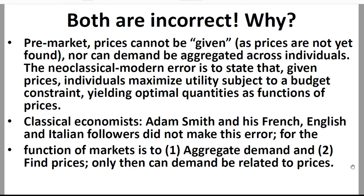The Classical Economist — Adam Smith in Chapter 7 of the Wealth of Nations, and his French, English, and Italian followers — did not make this error. In Adam Smith, the function of markets is simply to do two things: first, aggregate demand, because buyers and sellers have all arrived in market and they bring their private circumstances with them. The second thing that happens is that people find prices. And when they find prices, only then can we talk about demand being related to prices. That sequence is very, very important.